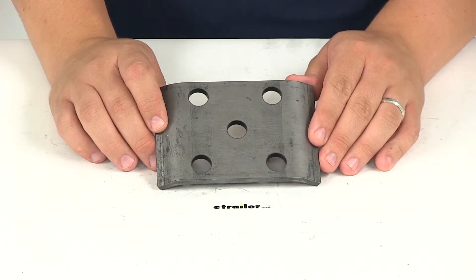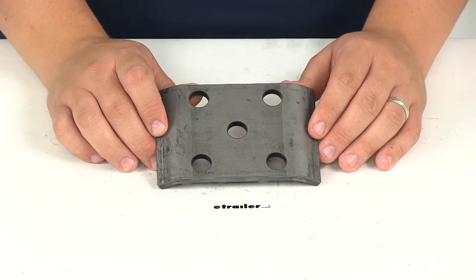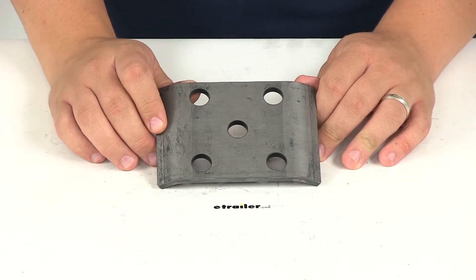It's going to attach with two nine sixteenth inch diameter square U-bolts. They are sold separately. If you need some of those, you can find them right here at eTrailer.com using part number 175130.